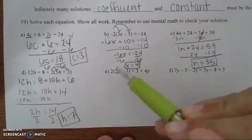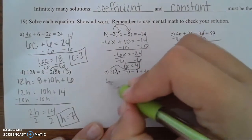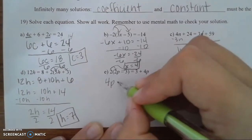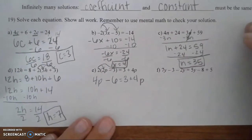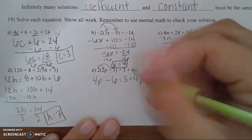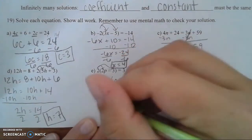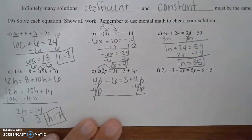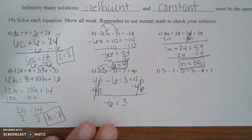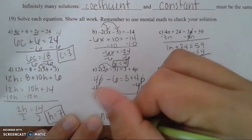For problem E, use the distributive property first. Multiply 2 times everything inside: 2 times 2p is 4p, and 2 times negative 3 is negative 6. Now with variables on both sides, move 4p to the left — but notice the 4p's cancel because they equal 0. You're left with negative 6 equals 3. We can never have negative 6 equals 3, so this equation has no solution.